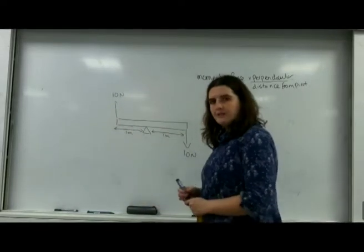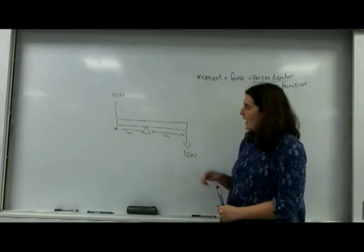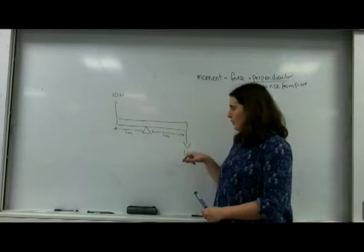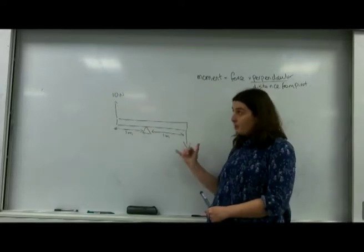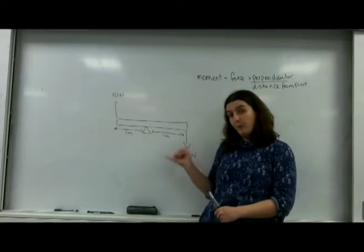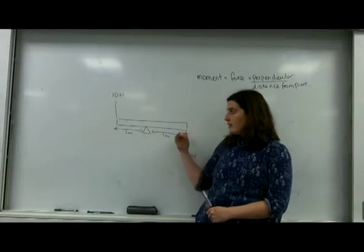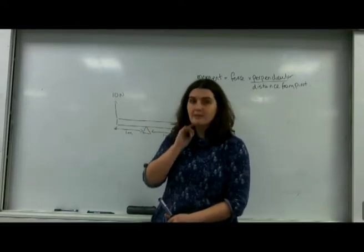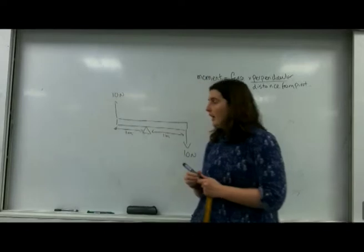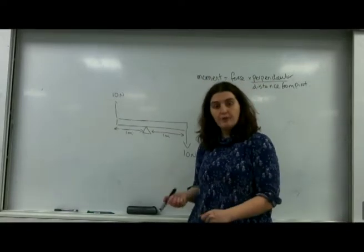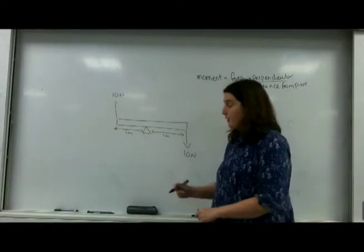A couple is a very special case where I've got two forces acting in opposite directions - so they're equal amount but opposite directions - either side of my pivot the same distance apart. What I'm going to do is find out the overall moment and simplify that down for you.